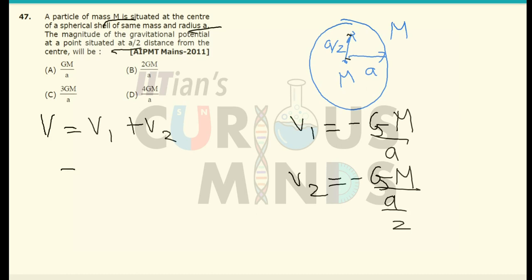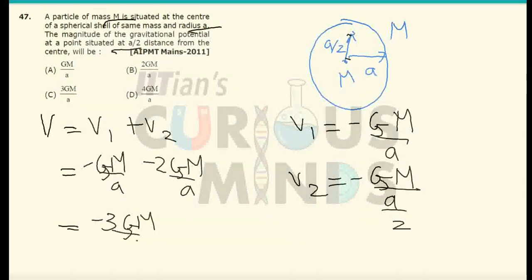So when I substitute this value it will be equal to minus GM divided by A minus 2GM divided by A which will simply be equal to minus 3GM divided by A. The magnitude will be 3GM divided by A which is equal to option C.